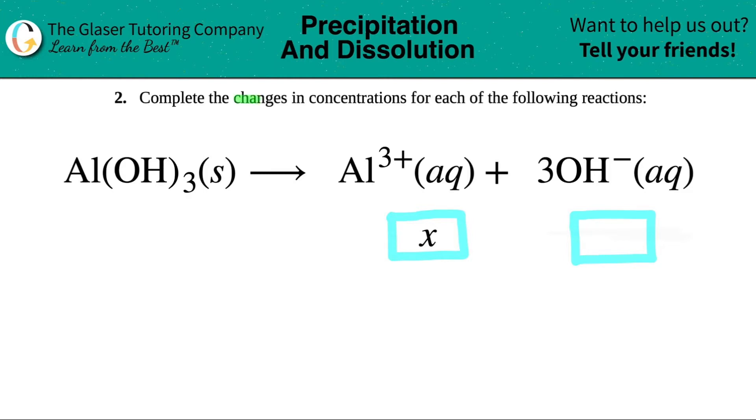Number two: complete the changes in concentrations for each of the following reactions. We have this balanced equation: aluminum hydroxide, Al(OH)₃ solid, which will dissociate into aluminum 3+ aqueous plus three hydroxides.